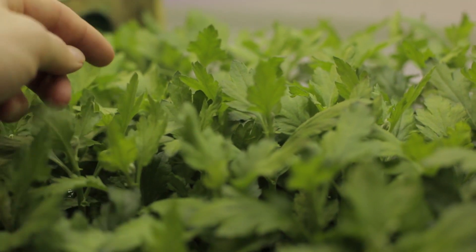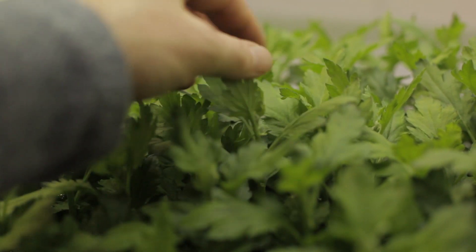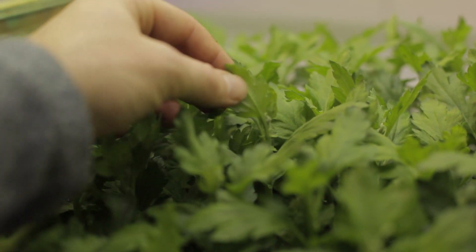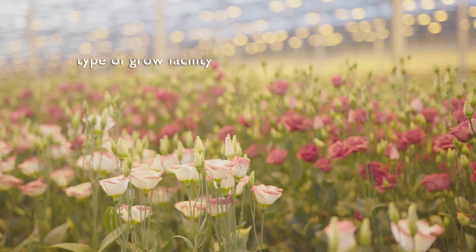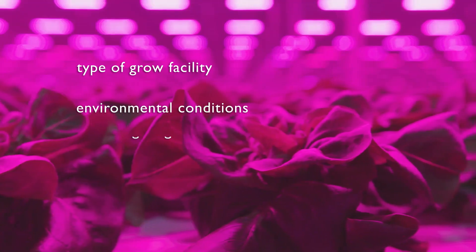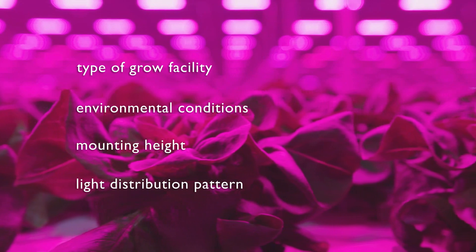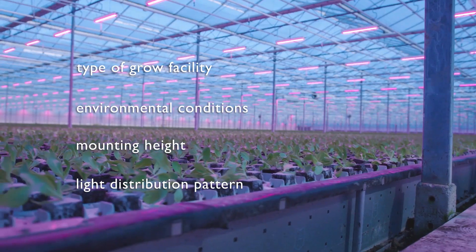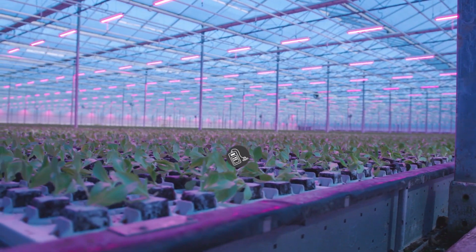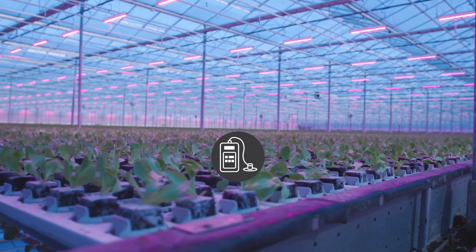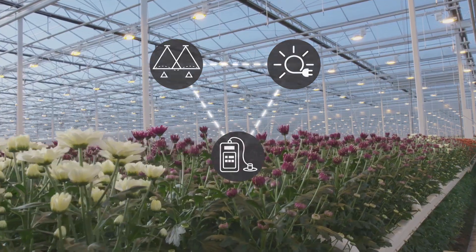The target light level at the crop canopy should always be the starting point of any light plan. Then, all the other factors that will affect the layout and performance of the luminaires should be considered to determine how to achieve the desired light intensity with optimal uniformity and efficiency.